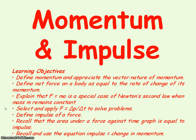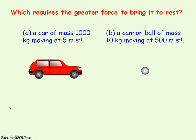We're going to be looking at momentum and impulse. First, let's consider a car of mass 1000 kg moving at 5 meters per second and also consider a cannonball of mass 10 kg moving at 500 meters per second.